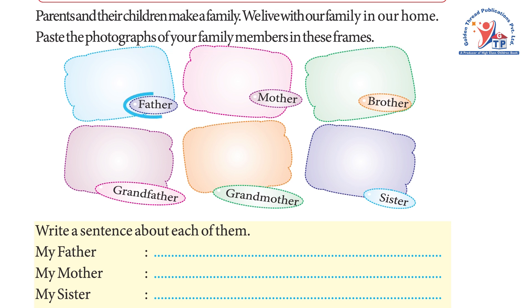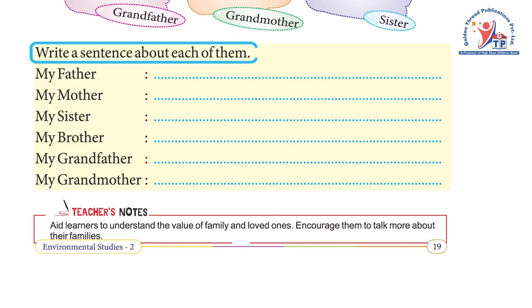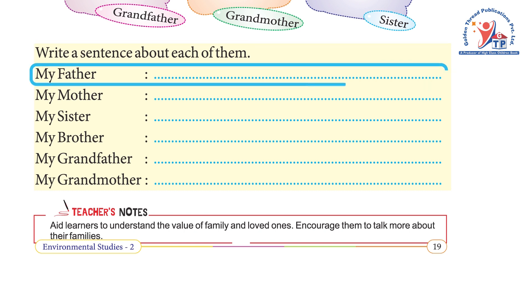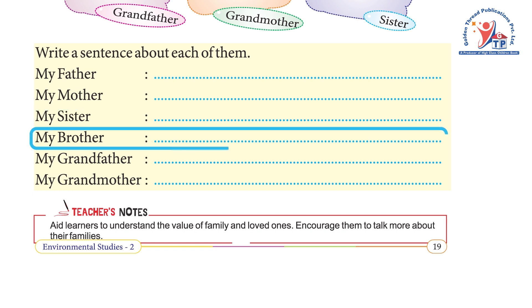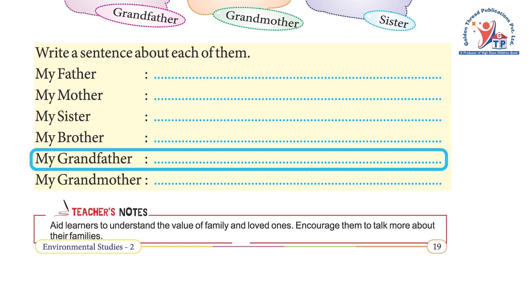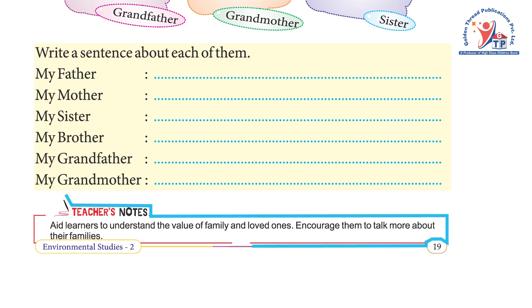Family members to label: father, mother, brother, grandfather, grandmother, sister. Write a sentence about each of them — my father, my mother, my sister, my brother, my grandfather, my grandmother. Teacher's note: aid learners to understand the value of family and loved ones, and encourage them to talk more about their families.